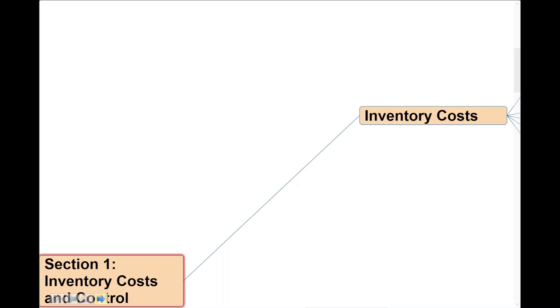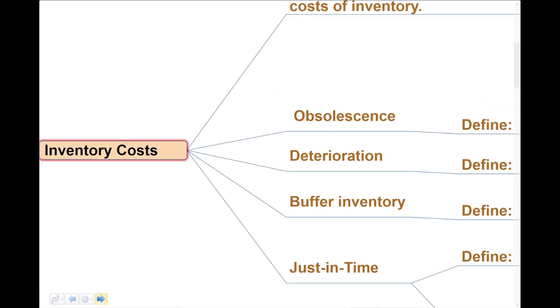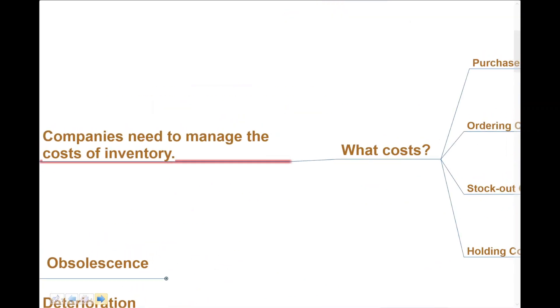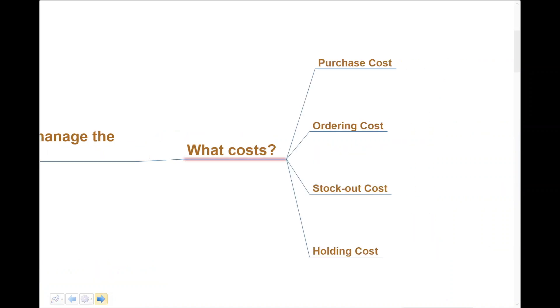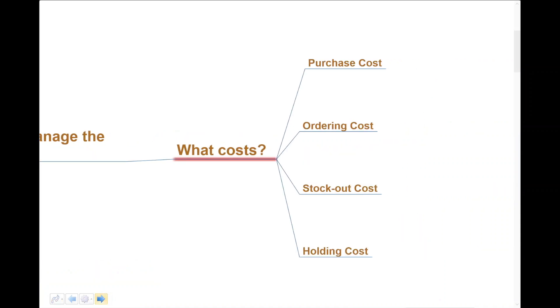Let's take a look at this first area: inventory costs and control. Companies need to manage the costs of inventory. When we think about inventory, remember we're thinking about anything from raw materials, work in progress, finished goods, partly finished goods—there's a range of different types of inventory and a range of different costs associated with different types of inventory, including the original or historic purchase cost. Where do we go to? Who's the best supplier? What's the best cost? Are we interested in quality?